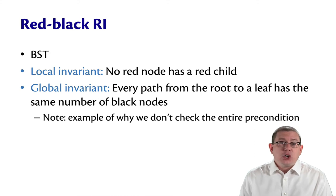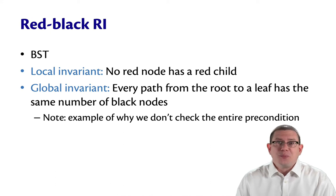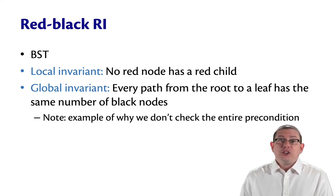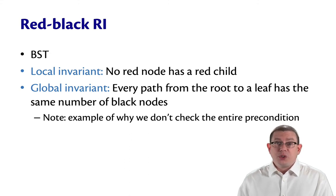This, by the way, is a good example of a time where we don't want to check an entire precondition or assert the precondition on entry to a function. Because every red-black tree operation is going to have this rep invariant implicitly as a precondition. And checking these invariants actually requires looking at every node in the tree. So, that would automatically cause every operation to become at least linear time, if not worse, if we were to assert the precondition.